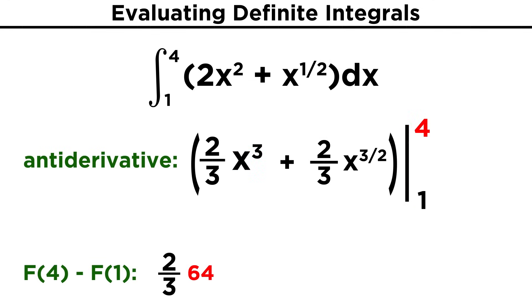4³ is 64, times 2/3 is 128/3. 4^(3/2) can be evaluated by first taking the square root to get 2, and then cubing to get 8, times 2/3 is 16/3, so we add these together to get 144/3. Evaluating for one will be a little easier, since we just end up with 2/3 + 2/3. That's 4/3 to be subtracted from 144/3, leaving us with 140/3.